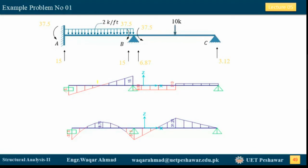Substituting everything into the equation AM = AML + AMD × D, we obtain all the AM values — the shear forces and bending moments throughout the structure — which can then be used to plot the shear force and bending moment diagrams. This completes the stiffness method solution for the problem.